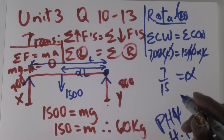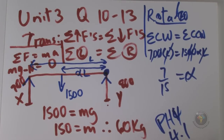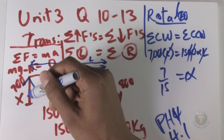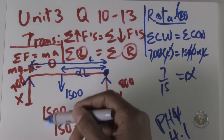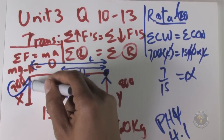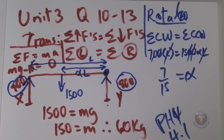For question 13, it's straightforward. The question asks what the scales read at x and at y. We've already been told the downward force at x is 700 newtons, and by Newton's third law the upward force must be exactly 700 newtons. At y, the upward force is exactly 800 newtons — a counteracting force.